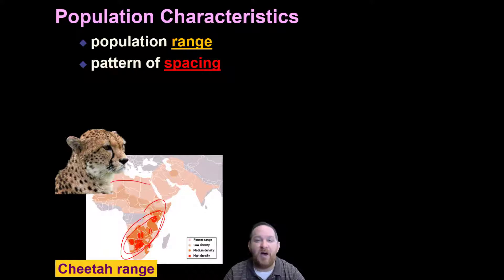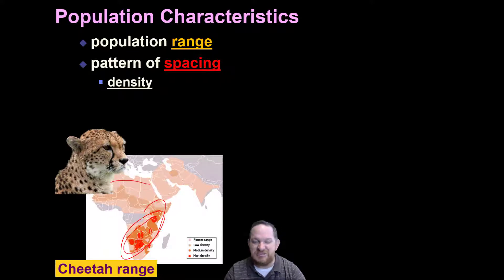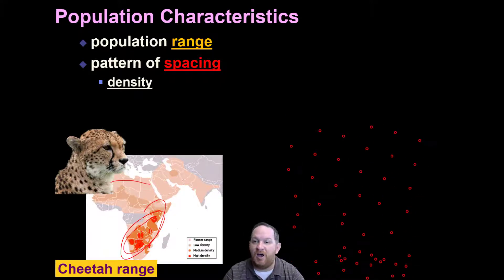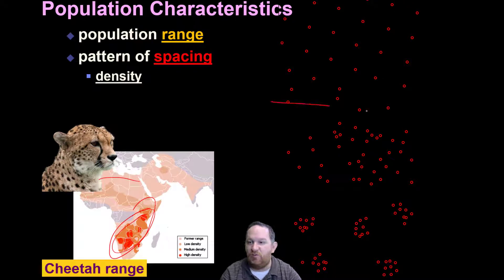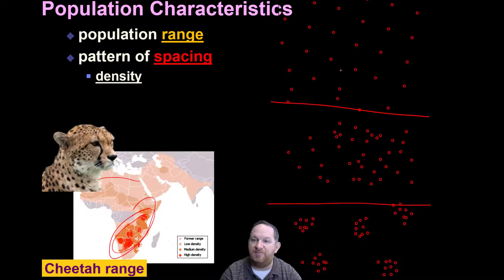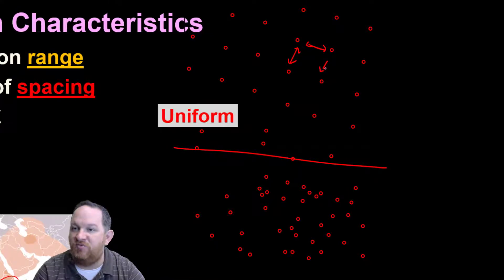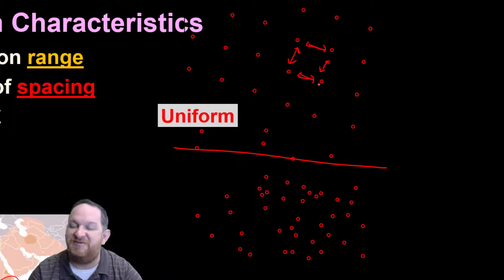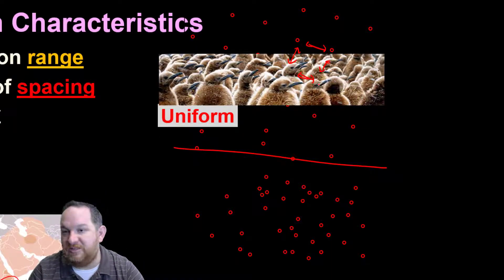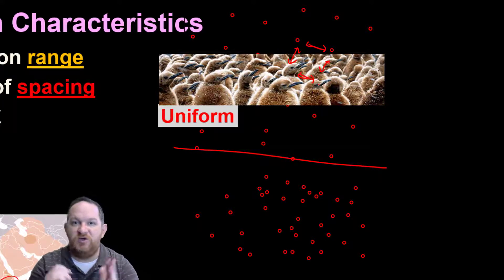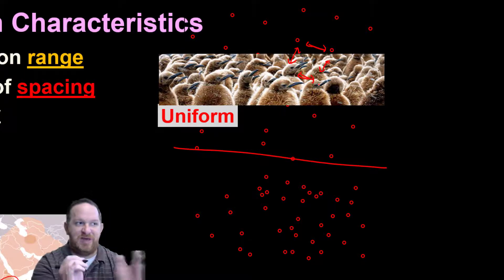Another way we talk about populations is in how they space. And this one's really interesting because it's about density and spacing. I've got three patterns. This top one is what we call a uniform pattern distribution — do you see how all these organisms or individuals are uniformly spaced apart from each other? An example of this would be the penguins. Here you see some penguin chicks, and they are notorious for individual spacing. They want to be uniformly spaced from each other.